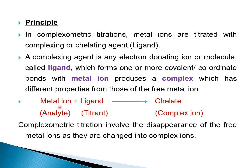The metal ion (analyte) reacts with a ligand (titrant) to form a complex ion, also called a chelate. Complexometric titrations involve the disappearance of the free metal ion as it is changed into complex ions.